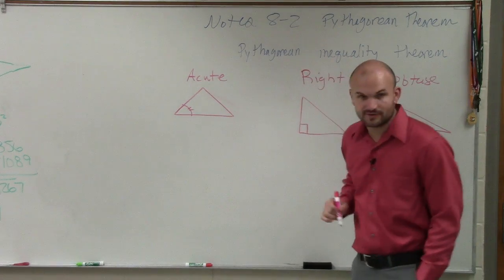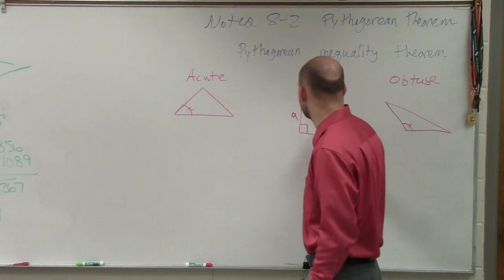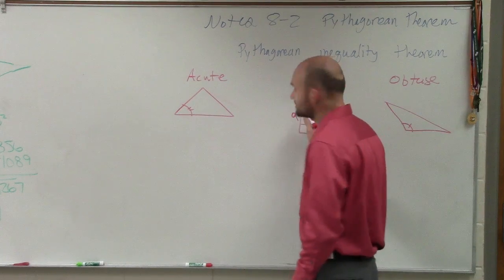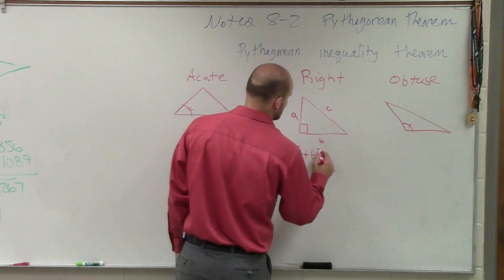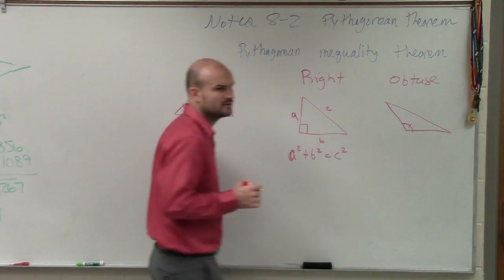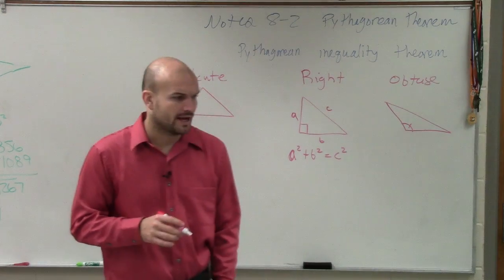So, Pythagorean theorem: we know we have a, b, and c. And we say as long as we have a right triangle, we know that a squared plus b squared equals c squared.